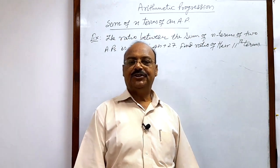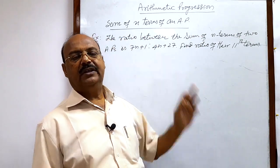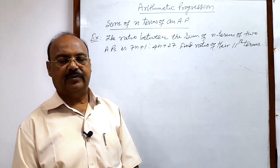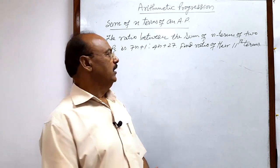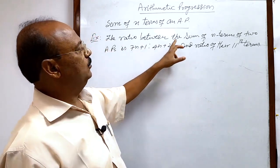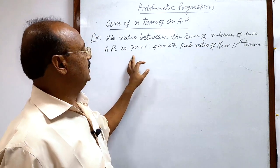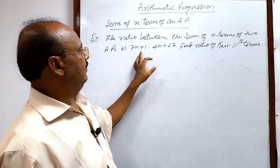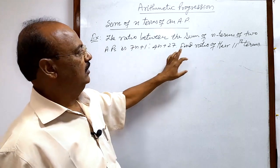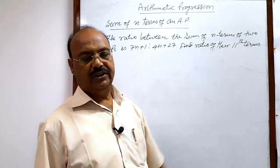Let us see a solution of this question from the topic: the sum of n terms of an arithmetic progression. The question is: the ratio between the sum of n terms of two APs is (7n + 1) to (4n + 27). Find the ratio of their 11th terms.